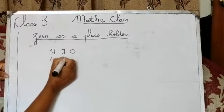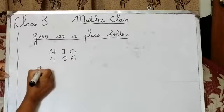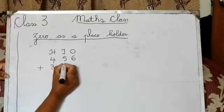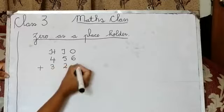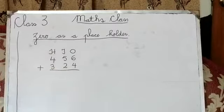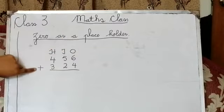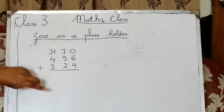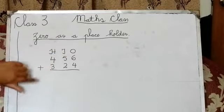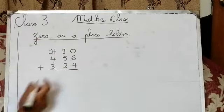400, 5 tens, 6 ones plus 300, 2 tens, 4 ones. We say the sum again: 456 plus 324. Or if we say as a place value: 400, 5 tens, 6 ones plus 300, 2 tens, 4 ones.